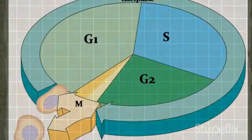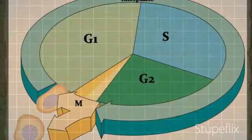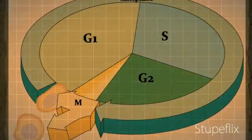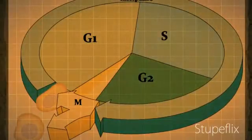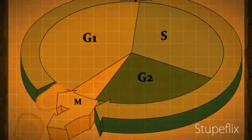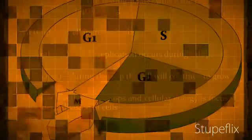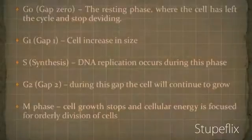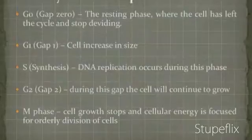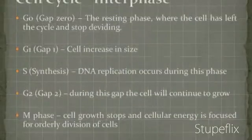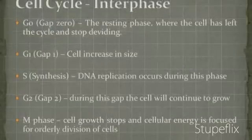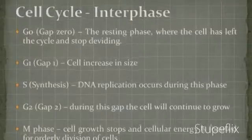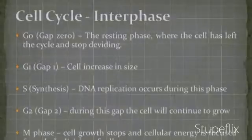Finally, the M phase, where cell growth stops at this stage and cellular energy is focused on the orderly division into two daughter cells, leading to complete cell division. G0 is the resting phase, G1 phase cells increase in size, S phase for synthesis, G2 is the gap where cells continue to grow, and M phase stops cellular energy focused on orderly division.